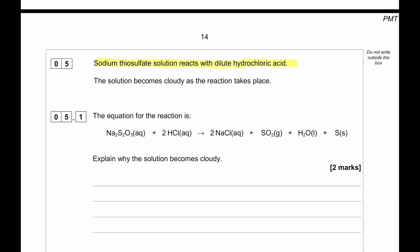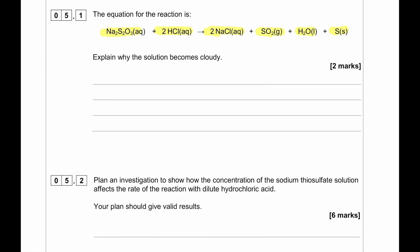Sodium thiosulfate solution reacts with dilute hydrochloric acid. The solution becomes cloudy as the reaction takes place. Sodium thiosulfate plus hydrochloric acid yields sodium chloride, sulfur dioxide, water and sulfur. Explain why the solution becomes cloudy. The sulfur that is produced is going to remain as a suspension. And that is a precipitate. And what it does is that it prevents light from passing through the water. That makes the solution cloudy.